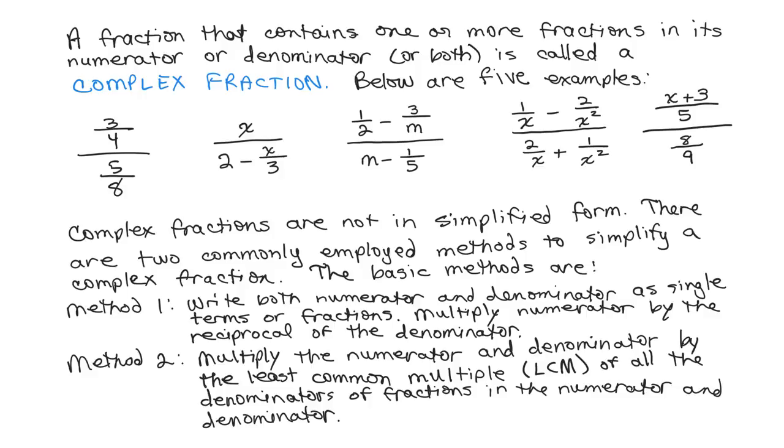You multiply the numerator and denominator of the complex fraction by the least common multiple of all the denominators of fractions in the numerator and denominator. This eliminates the complex fraction in the first step.